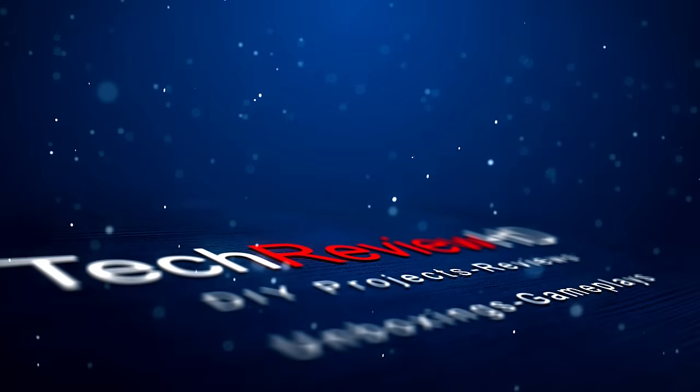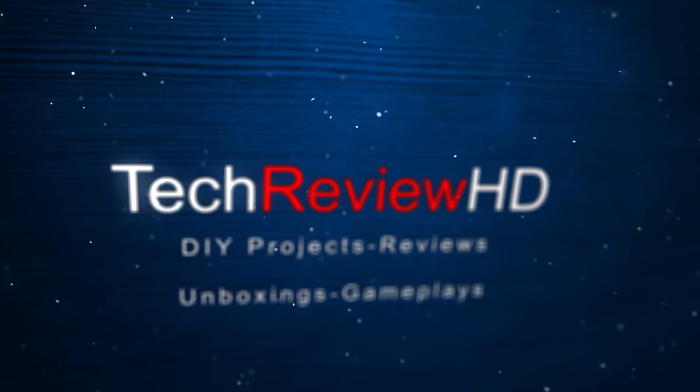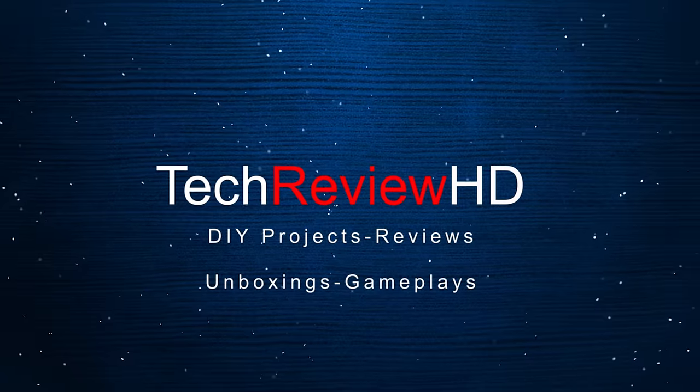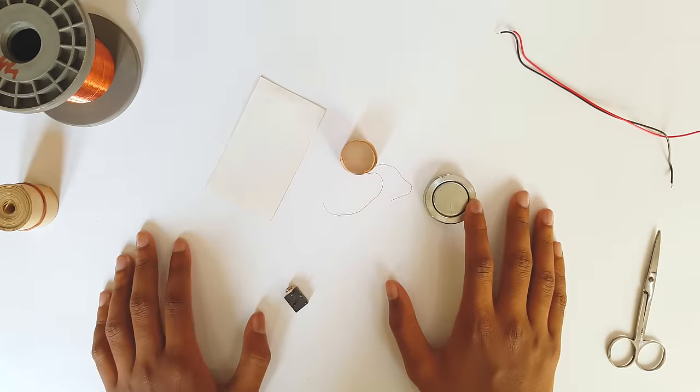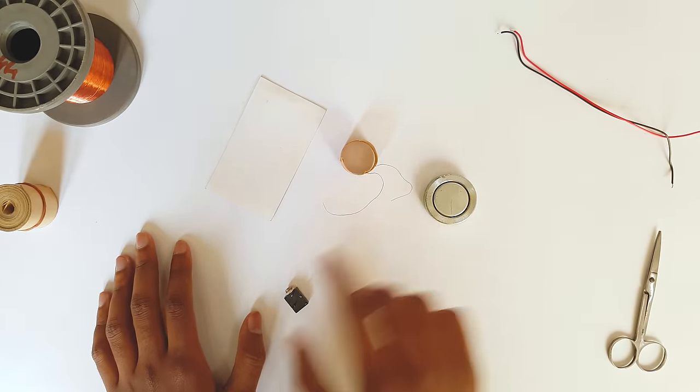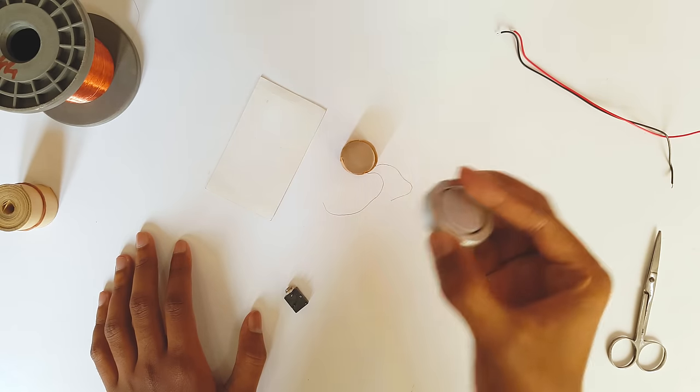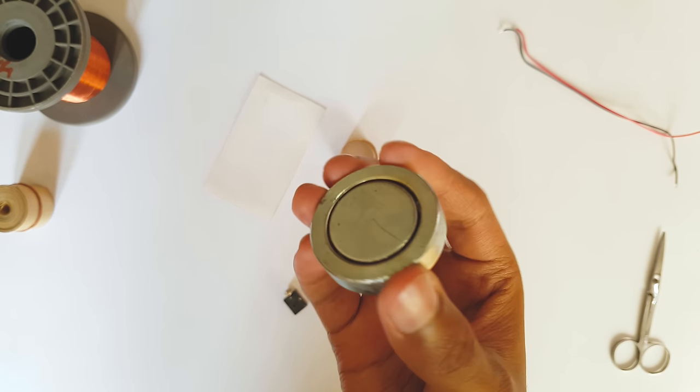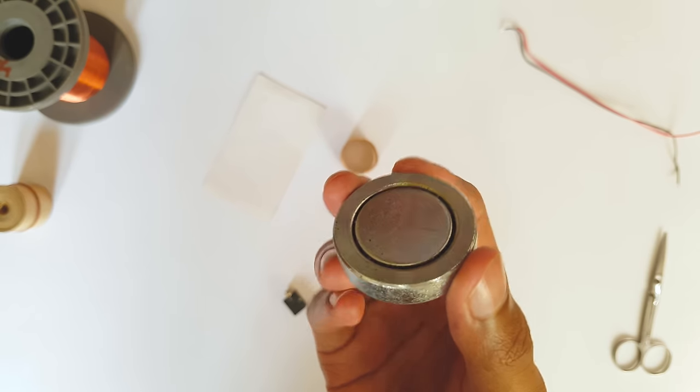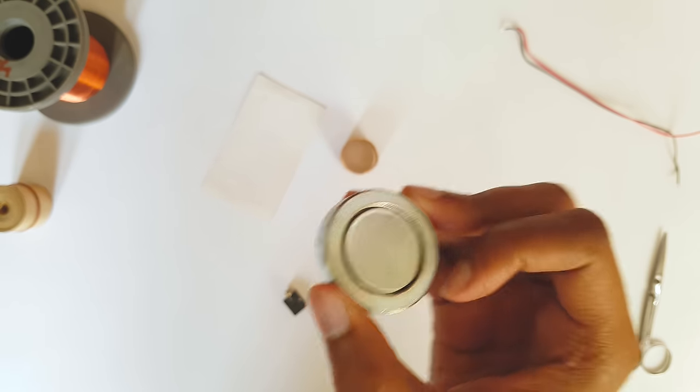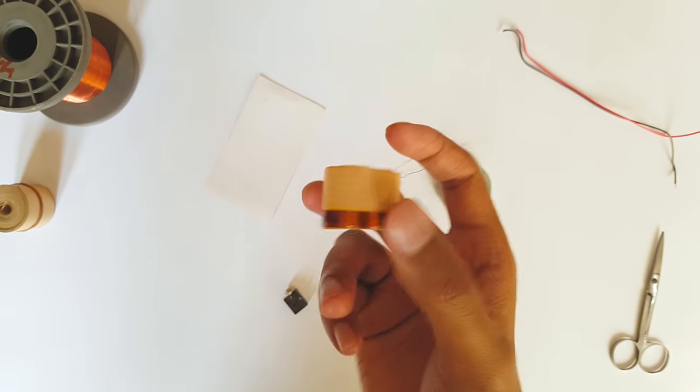Check, 1-2-3, okay. Let's start making this microphone guys. These are the components you need to make this microphone. You need a magnet, this is how the magnet looks like. You can get this from any old speaker or you can even purchase it online from eBay. You need a voice coil.